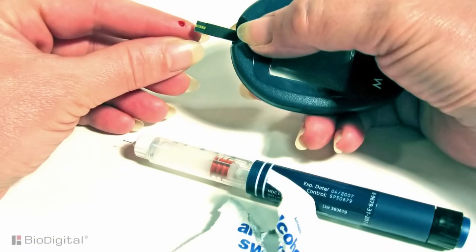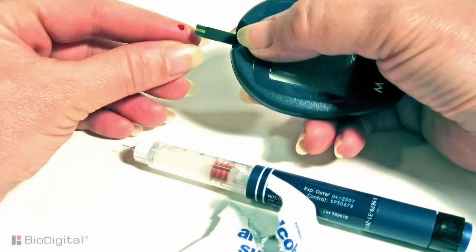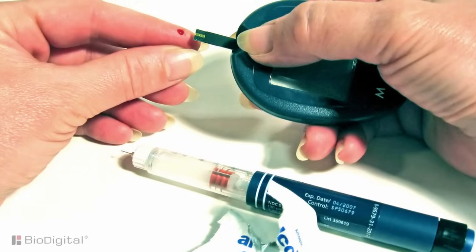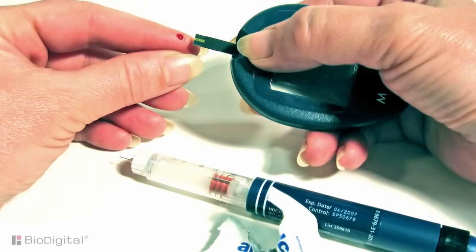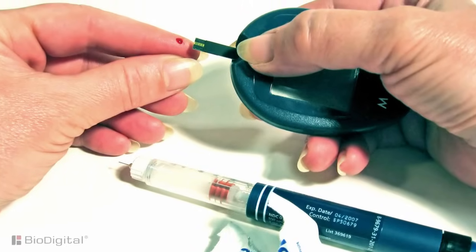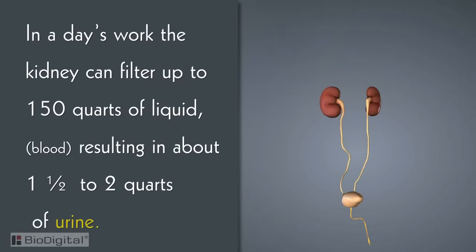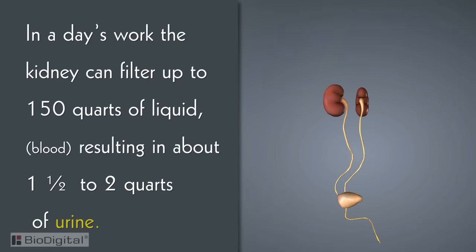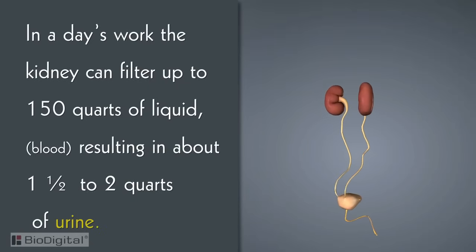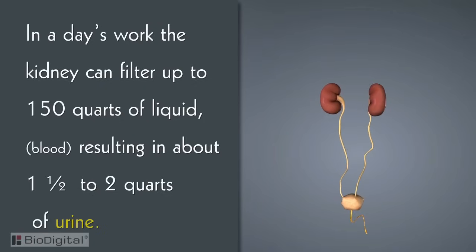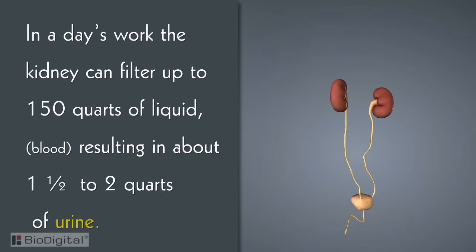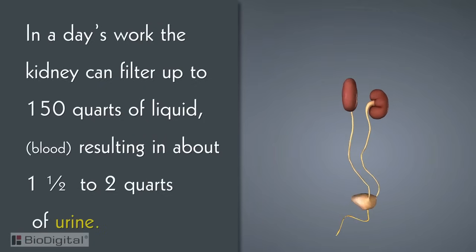Excess sugar found in the urine can be indicative of diabetes. In a day's work, the kidney can filter up to 150 quarts of liquid, resulting in about one and a half to two quarts of urine — that's if you're drinking the proper amount of water.